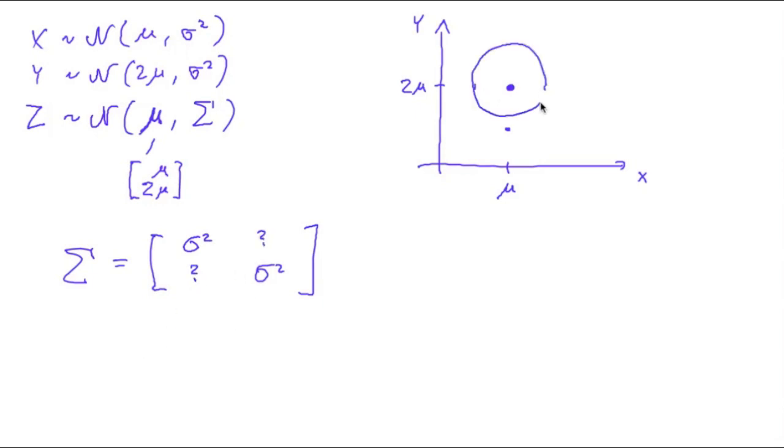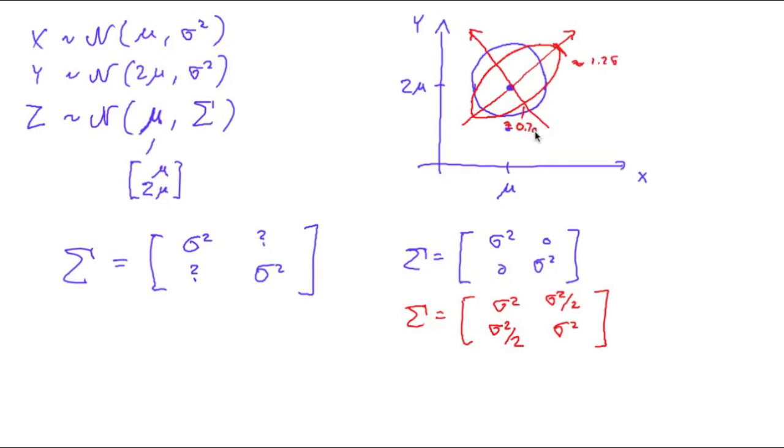And so, it is correct that this may be a circle, in which case it would be like that. However, it could also be the case that this is sigma squared half, and so then this would be an error ellipse like that. Now, this is approximately at 1.2 sigma, and this is at 0.7 sigma.